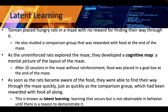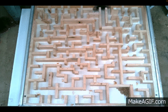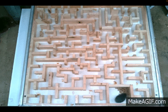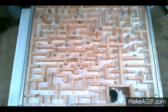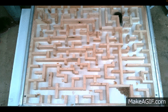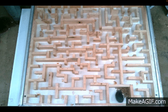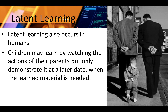Latent means delayed. Latent learning also occurs in humans — children may learn by watching the actions of their parents but only demonstrate it at a later date when the learned material is needed.